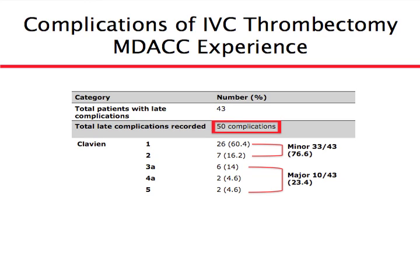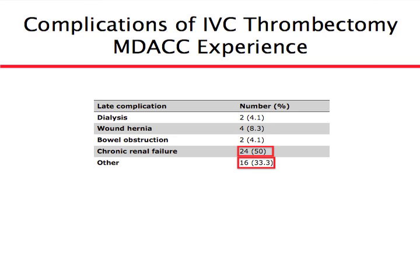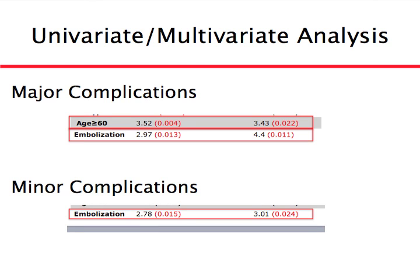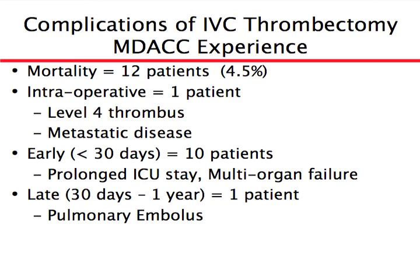Complications after 30 days — when patients are typically at home — are mostly minor, though some are major. The most common is chronic kidney disease, which makes sense since the patient now has one kidney. The main predictor of complications is age: the older the patient, the higher the chance of a complication. In some patients there is also a risk of dying after surgery — a small percentage — but something we discuss with patients before such a procedure, especially when invasion is deep into the vena cava or heart.